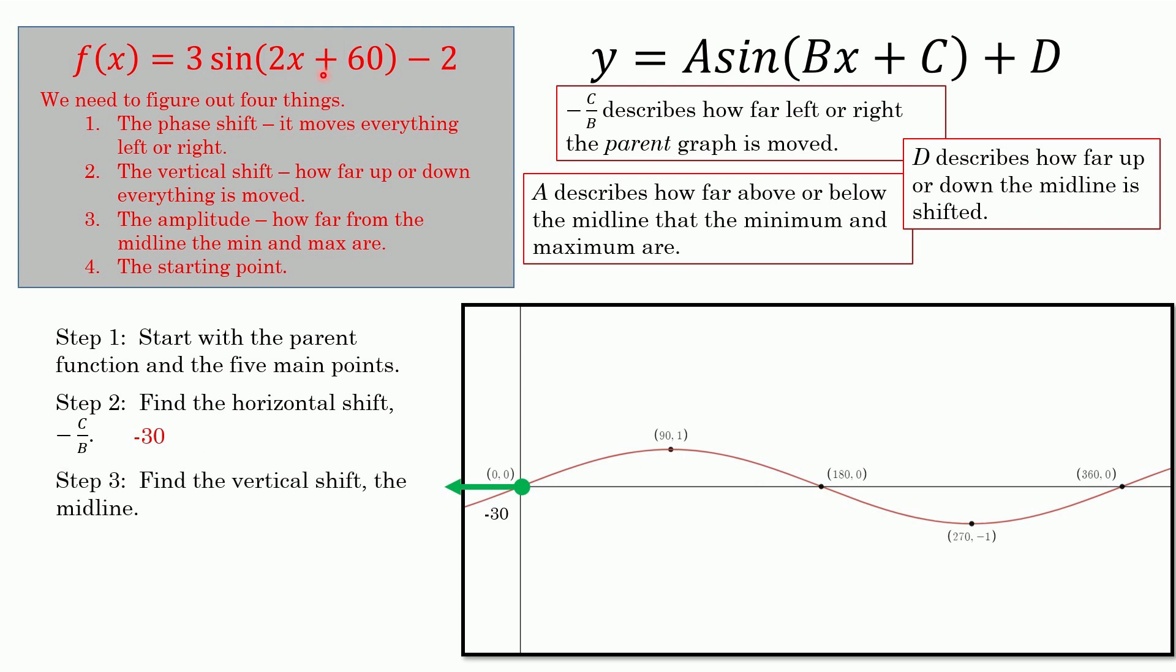The vertical shift is absolutely the easiest part. The whole thing gets moved up or down, whatever that is. Since that says negative 2, we go down by 2. That means the midline, or sometimes it's called the principal line or the principal axis, is negative 2. So the whole thing gets moved down 2. We went left 30, down 2. And now the amplitude. The amplitude is how far up or down from this midline that the whole graph goes. For this one, it's 3. A is 3, so the amplitude's 3. It goes up and down 3 from here.